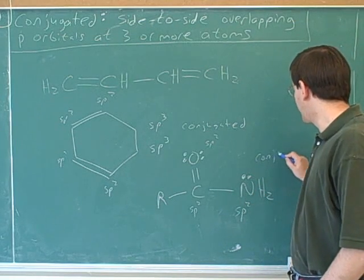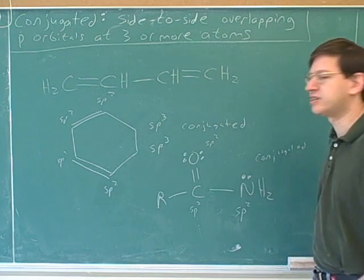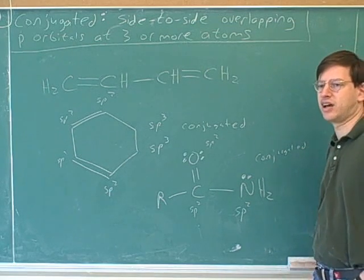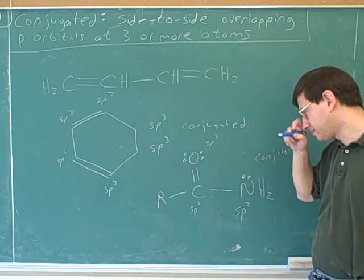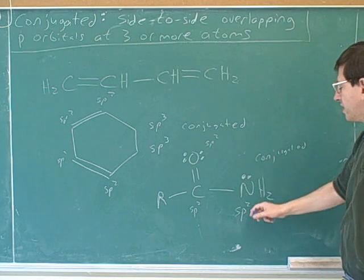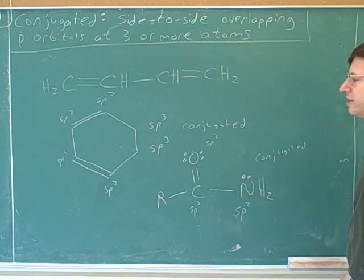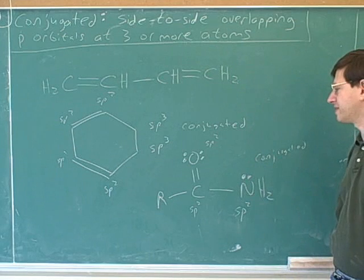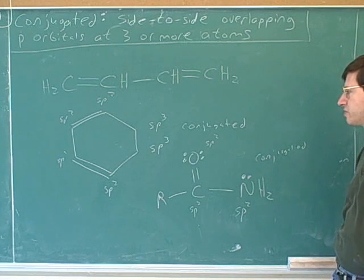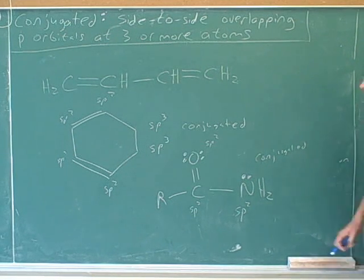This is the one that I think might be most difficult for students to see that it is conjugated. But we can use our rules and our exception for hybridization to see that. You're pretty sure to see some examples like this on the test where you're asked whether a molecule is conjugated or not. These are good to have in your notes.